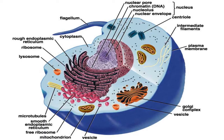The endoplasmic reticulum is connected to the double-layered nuclear envelope, providing a pipeline between the nucleus and the cytoplasm. In plants, the endoplasmic reticulum also connects between cells via the plasmodesmata.